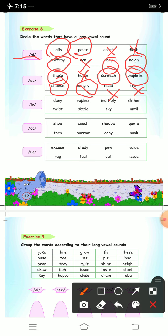Next is long i sound. First one is deny, yes, because it makes the long i sound. Replies, yes we will circle. Multiply, yes. Slither, no. Twist, no. Sizzle, no. Sky, yes, it makes the long i sound so we will circle it. Until, no, we will not circle this.